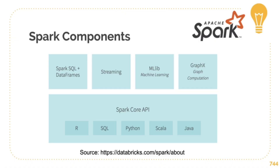These are the main components of Spark as it stands today. We have Spark SQL for structured SQL-type data, streaming data processing, machine learning libraries, and GraphX for graph computation. And these are the APIs it supports: R, SQL, Python, Scala, and Java. Spark also introduced a lot of libraries that can work in different programming languages including Python, and it allows support for machine learning, streaming data, and all sorts of things. So Spark was basically a game changer.